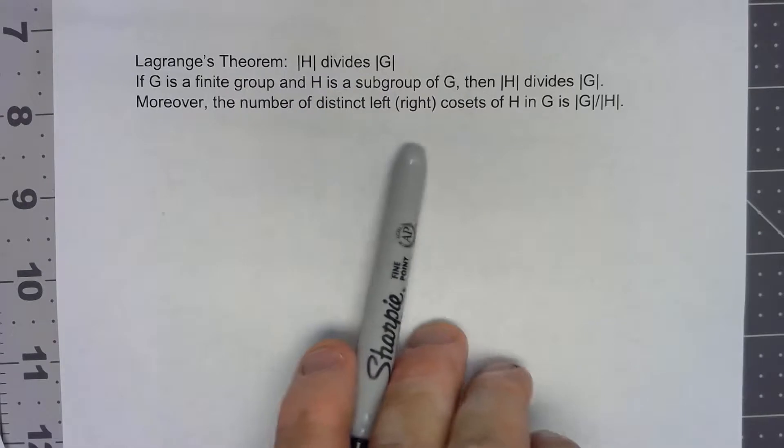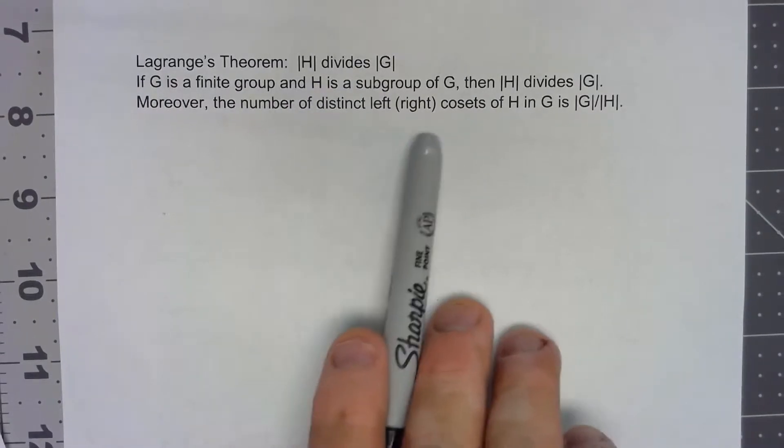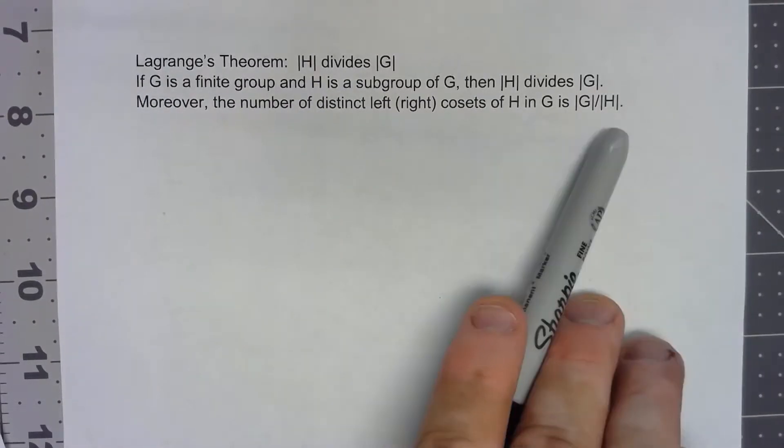And then further, we can even get a count of how many cosets there are for that subgroup.